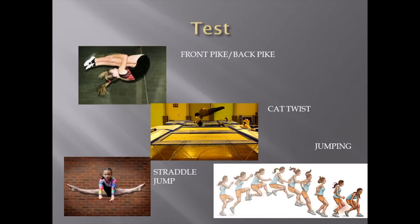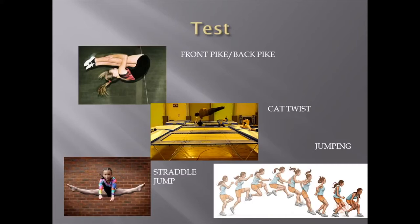Let's go through the test answers. For the front pike and back pike: the axis of rotation is the medial-lateral axis — imagine a bar at the hips rotating around it. The plane is the sagittal plane, because the movement is anterior or posterior — moving forward or backward. For the cat twist: the axis of rotation is the longitudinal axis, with a bar going from head to feet, spinning around it. The plane of movement is the transverse plane — it's always the spinning plane.